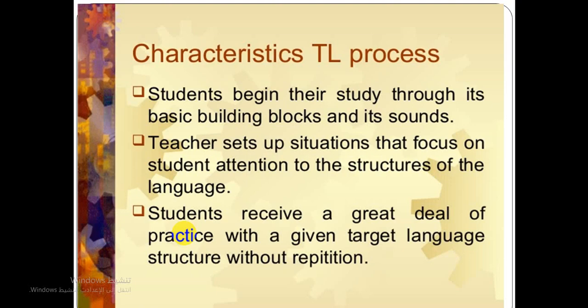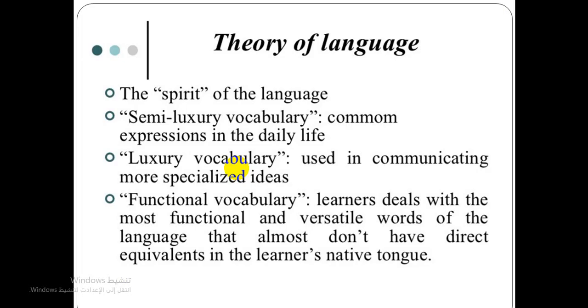What are some characteristics of the teaching and learning process in the silent way method? The choice of vocabulary is important with functional items. Translation and rote repetition are avoided. The language is usually practiced in meaningful context. Evaluation in this method is carried out by observation, and the teacher may never set a formal test.